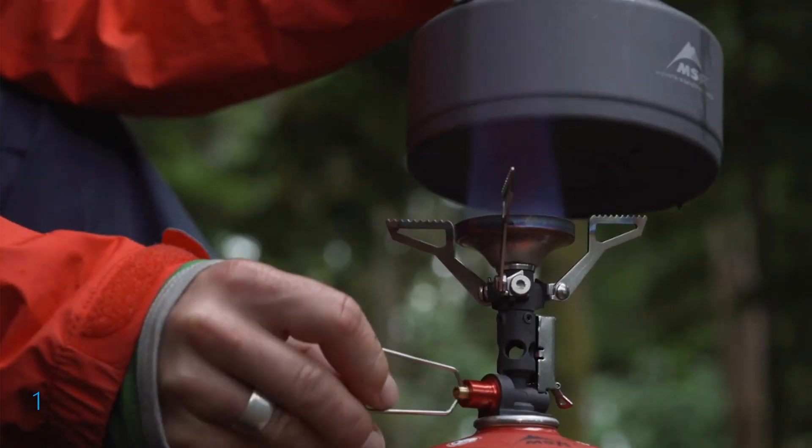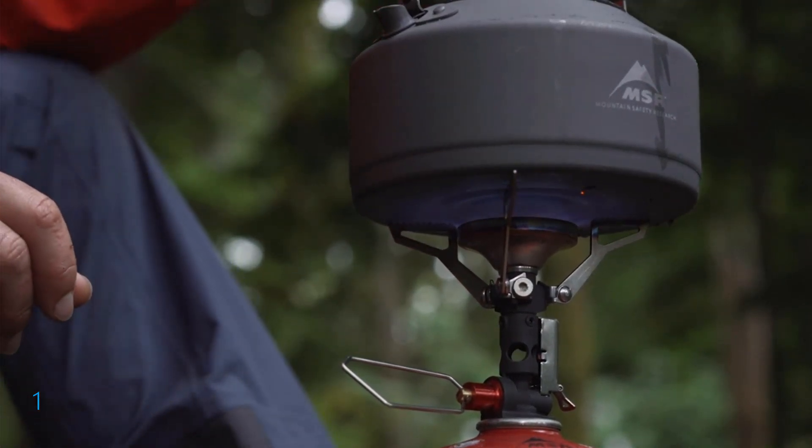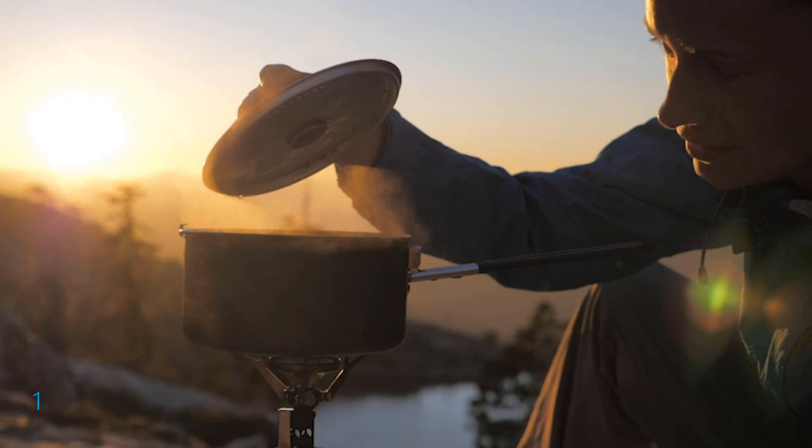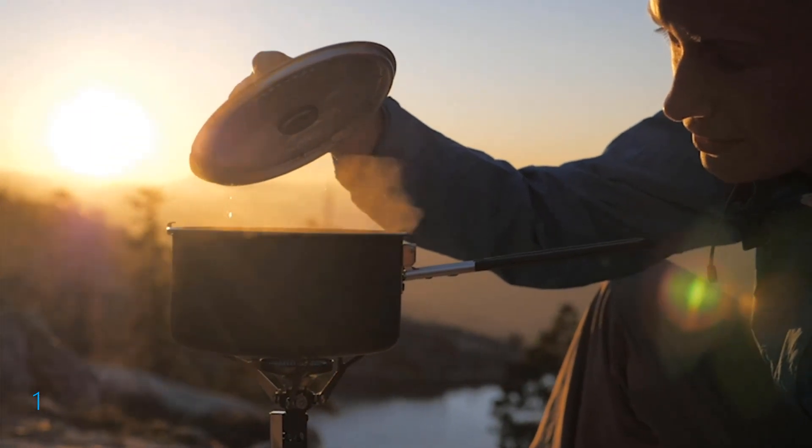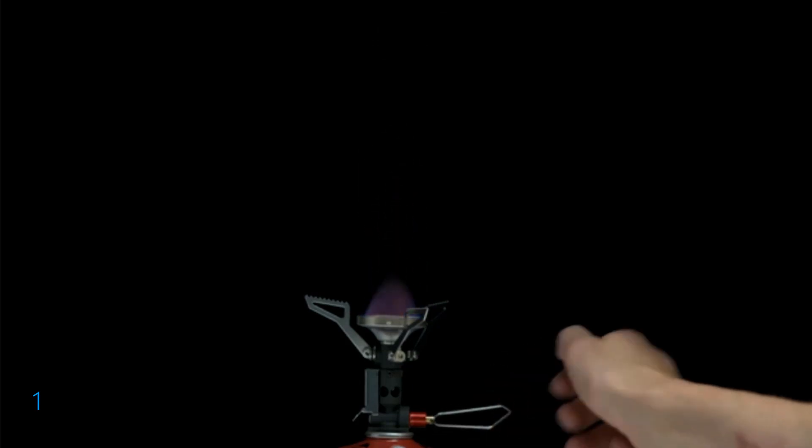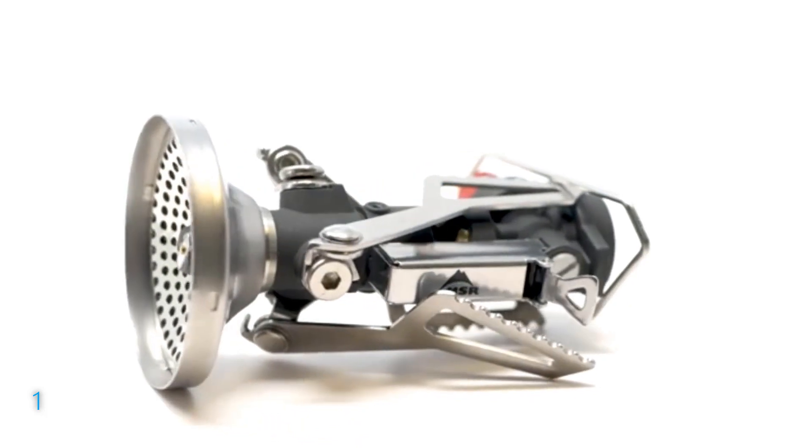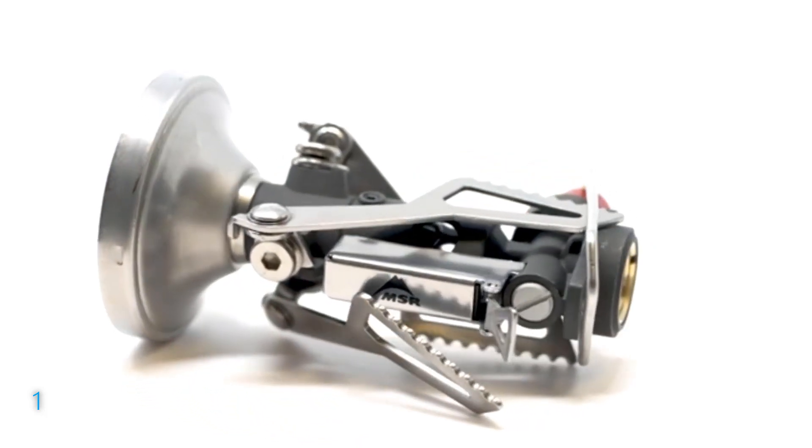With its broad burner, the Pocket Rocket Deluxe generates a powerful flame despite its compact size, and the burner's lip adds wind resistance, increasing efficiency. Precision flame adjustment allows you to go from torch all the way down to simmer, and the stainless steel pot supports fold down to create an impressively small pack size.